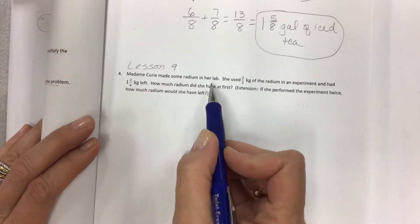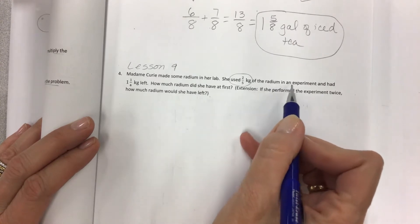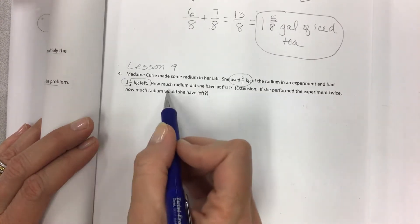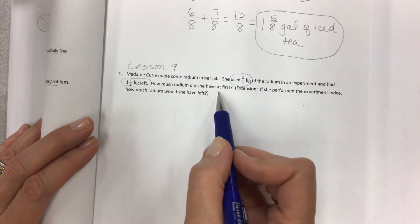Madame Curie made some radium in her lab. She used two-fifths of the radium in an experiment and had some left. How much radium? One and one-fourth kilogram left. How much radium did she have at first?